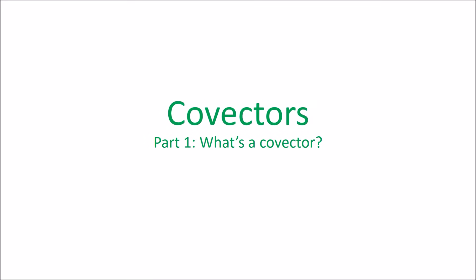In the last couple videos we saw our first example of a tensor, which was the vector. We saw that vector components transformed in the opposite way that basis vectors do, and because of that we said that vectors were contravariant. In the next few videos we're going to talk about our second example of a tensor, which is the co-vector.